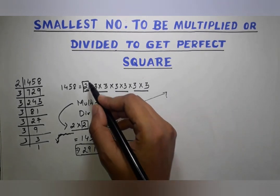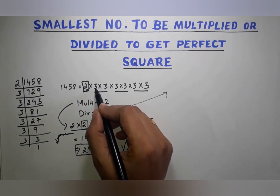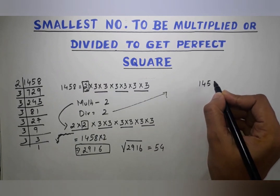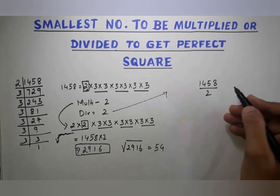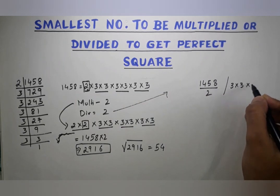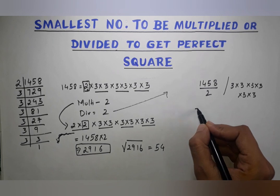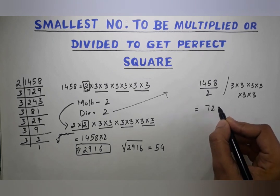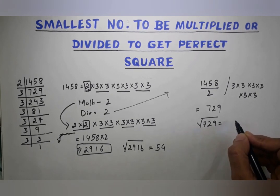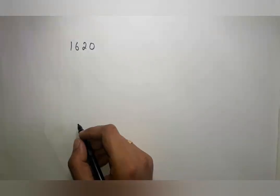In the case of division, I divide by 2 to remove the unpaired 2. So 1458 ÷ 2 = 729. All remaining factors are 3s in complete pairs, giving 3×3×3×3×3×3. The result 729 is a perfect square, and the square root of 729 is 27.